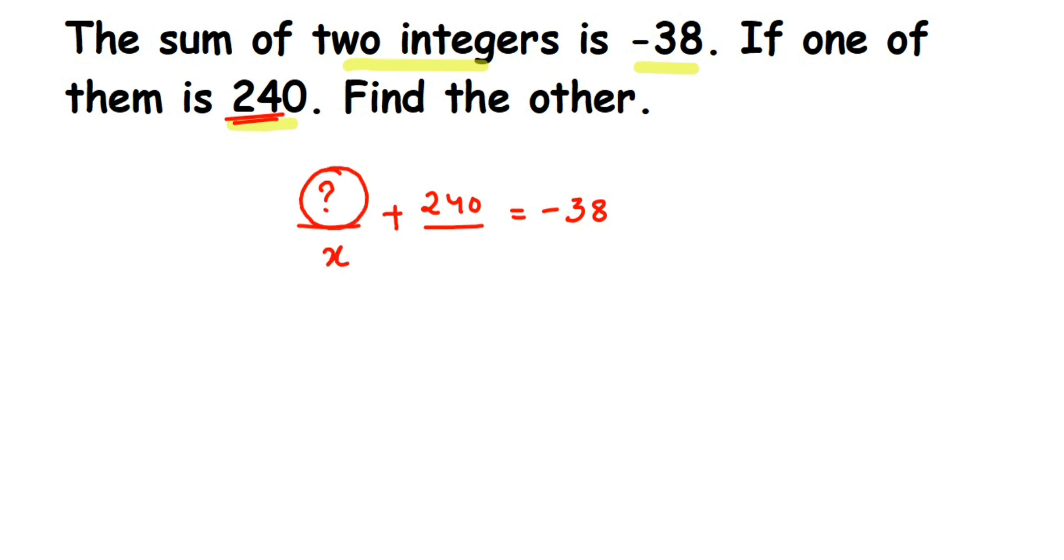So let's solve this. We got here like an equation and then we're going to proceed further. So let me take the unknown number, the second number to be x. Let the other number be x and the given number is 240.